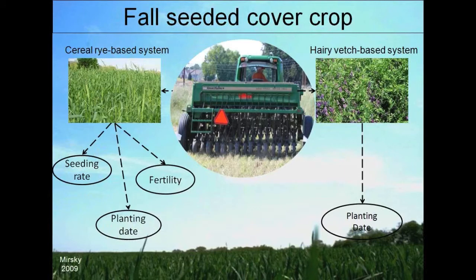In grain systems, we use no-till drills for cereal rye-based systems as well as hairy vetch-based systems. You can see it's being planted through crop residue. Important factors to consider in the case of hairy vetch include planting date, fertility in the system, seeding rate, as well as planting date — all play a factor in establishment and success.